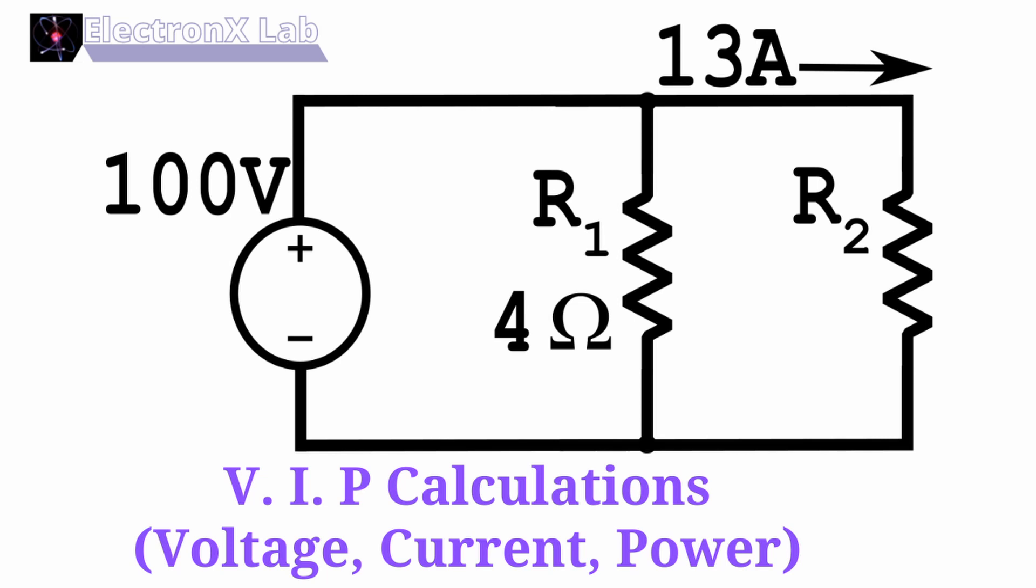Hey there, welcome to the Electronics Lab. In this video, I'm going to try to go through five circuits in five minutes. I'm looking at circuits that have resistors in series or in parallel, and I'm going to calculate the voltage across, current through, and power dissipated by all of the resistors in the circuit. I don't have much time, so let's get started.